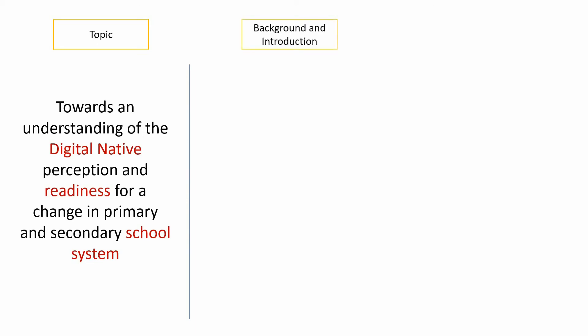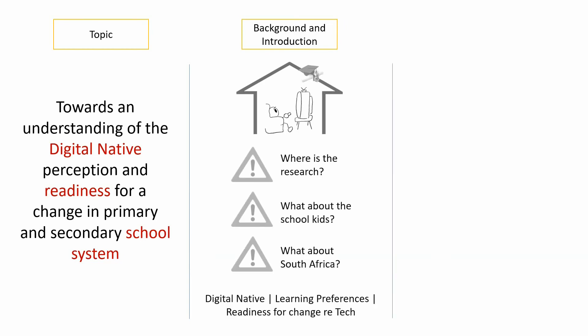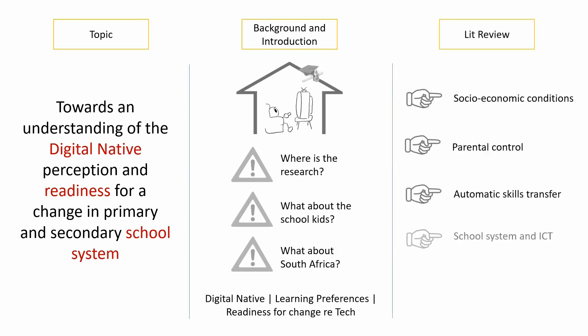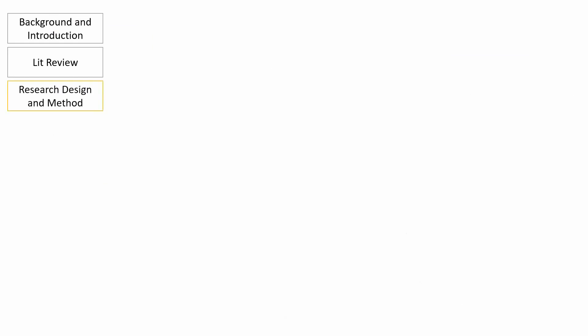Background and intro: there is a call to radically change the school system because there is presumably a new type of student called a digital native who is practically addicted to technology. Our problem statement is that there is no research on the subject that speaks to the school kids of South Africa, so how do we know that we are doing the right thing by radically changing the school system? In our study we want to understand the digital native status, their learning preferences, and how ready they are for changing the school system when it comes to the use of technology. In our lit review we had a few arguments on socio-economic conditions, parental control, skills transfer, how the school system itself may be influenced by a tech-heavy curriculum, and the learning preferences of the digital native.